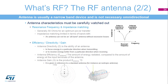Antenna characteristics must be carefully considered. Resonance frequency and impedance matching: generally 50 ohms for optimal power transfer, with impedance matching limited in terms of bandwidth. An antenna cannot be a wideband antenna without excessive losses. Antenna directivity (D) is the ability of an antenna to focus energy in a particular direction when transmitting or to receive energy better from a particular direction when receiving. Antenna efficiency (E) is the amount of energy radiated compared to the energy at the input terminals. Antenna gain (G) is the product E × D, given in reference to a standard antenna such as an isotropic antenna.